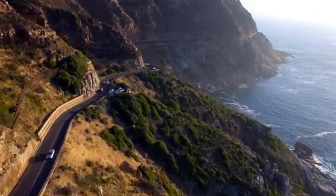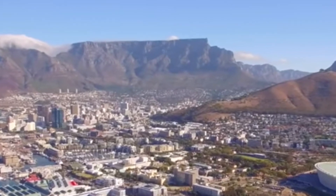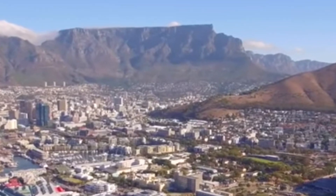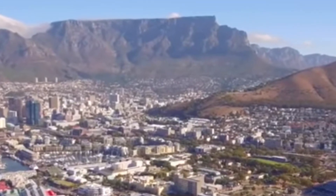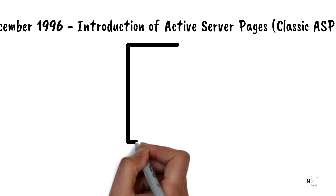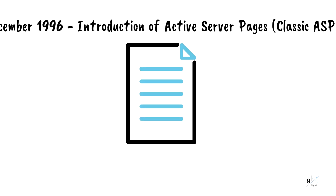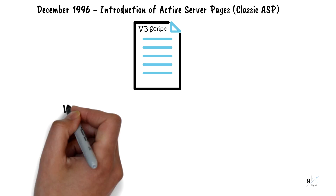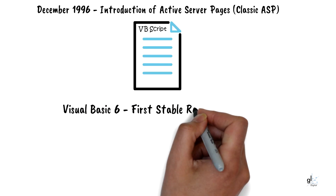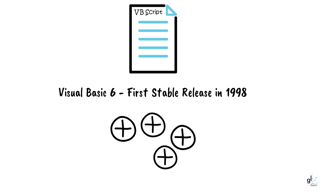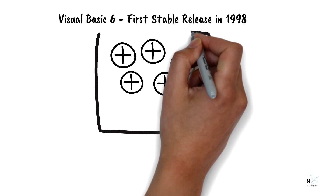I remember working as a young developer in the late 90s on enterprise web applications. When I look back, I'm proud of what we were able to achieve using what is now known as Classic ASP or Classic Active Server Pages. Classic ASP was introduced as Microsoft's first server-side scripting technology for creating web applications. The ASP files were coded in VBScript. We wrote our business logic in Visual Basic and compiled our code into COM components, which we installed in an environment known as MTS, Microsoft Transaction Server.